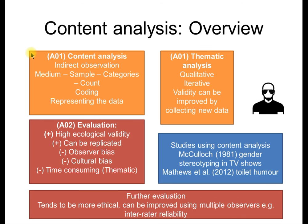So an overview: content analysis is an indirect observation. We select our medium, decide what sample we're going to use, develop our categories and count the number of occurrences. Coding is crucial and how we represent the data is fundamental. Another type of content analysis is thematic — much more qualitative. We iteratively identify themes, and we can then apply these themes to a new set of data to increase the validity of our thematic analysis. Content analysis has high ecological validity, is replicable, suffers from observer bias and cultural bias, and can be time consuming. Studies such as McCulloch on gender stereotyping in TV shows and Matthews on toilet humor are good examples. Further evaluation: it tends to be more ethical, and can be improved using multiple observers.